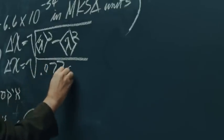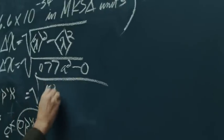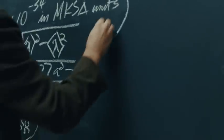So that delta x equals the square root of 0.077a squared minus 0, from which we derive the square root of 0.077a squared. And also,